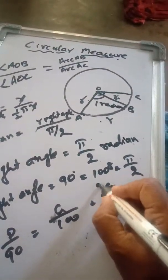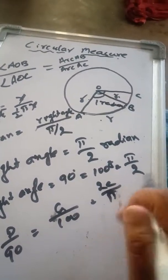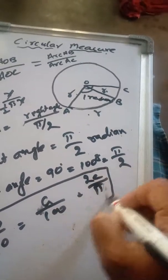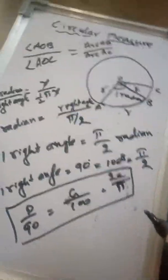I took the reciprocal, so this becomes 2C/π. So our formula is: D/90 = G/100 = 2C/π. Simple thing.